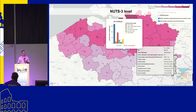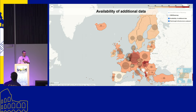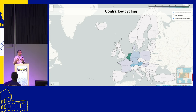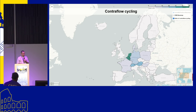We operate at the NUTS-3 level, so for each country you can go into a more detailed map and get statistics for specific small regions. We also look at the availability of additional data, and something particularly interesting is how widespread contraflow cycling is — enabling cycling on one-way roads — and we can generate a few more maps that are interesting from this point of view.